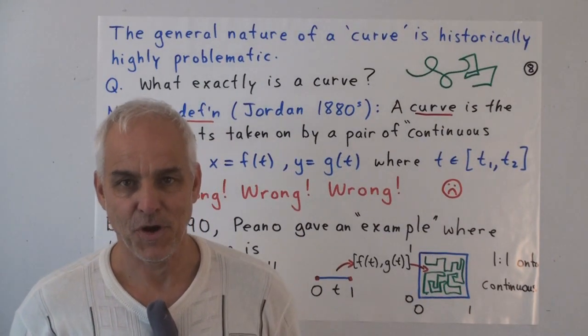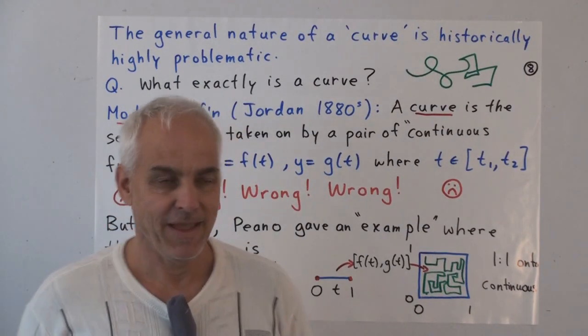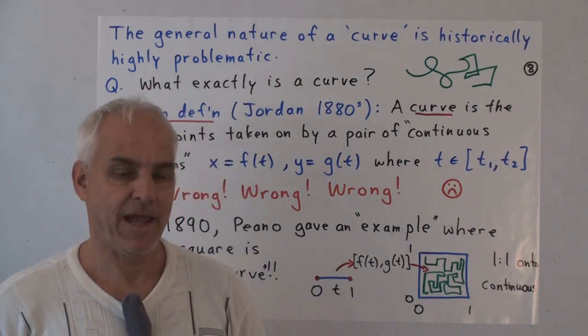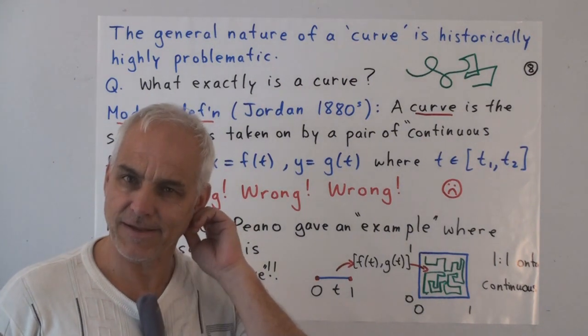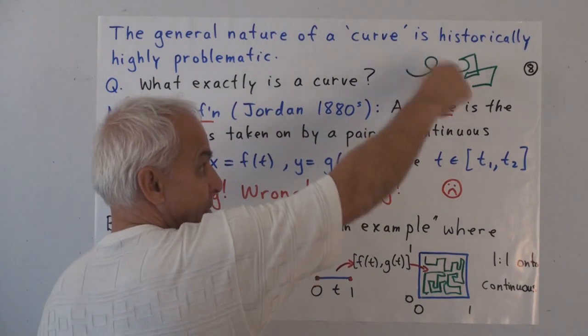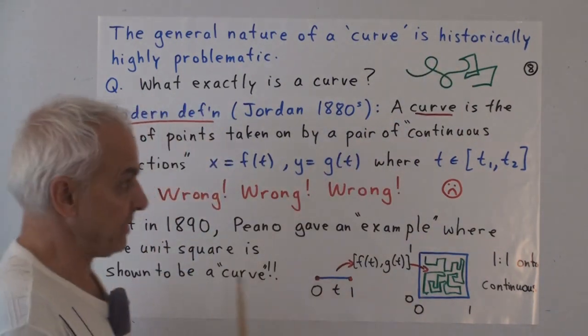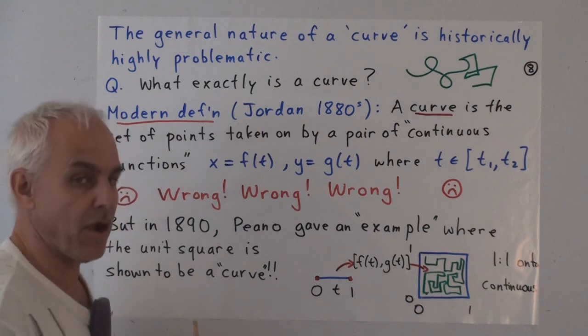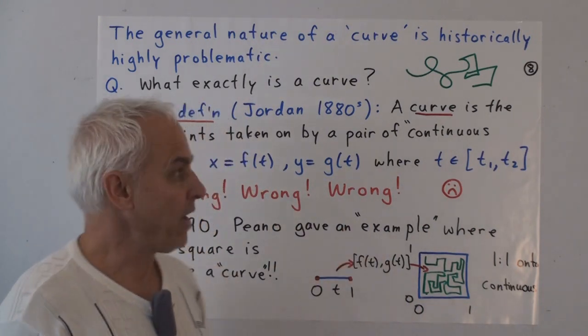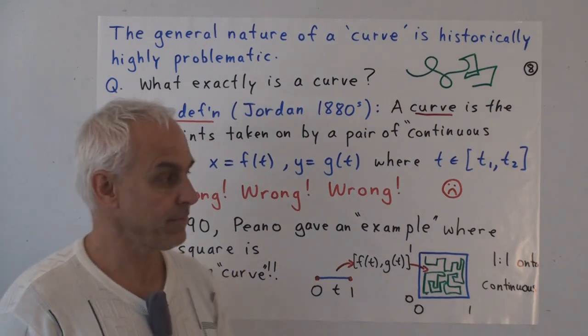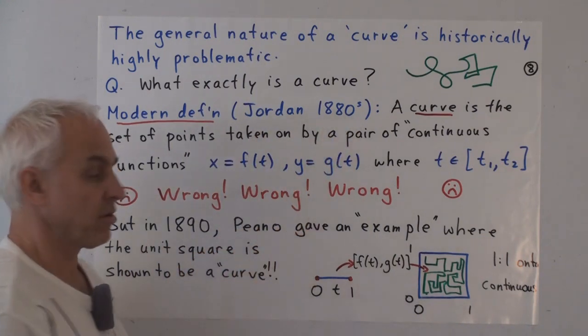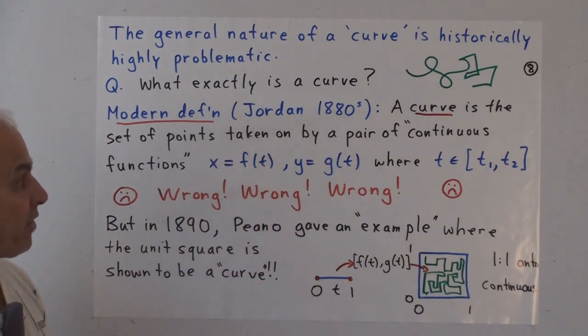But still, it begs the question: what exactly is a curve? It's a rather subtle question. And historically, it's caused quite a lot of problems. There's been a lot of debate and introspection and analysis of figuring out what exactly are we talking about when we're talking about a curve. It's easy enough to put our pen down on paper and squiggle around a little bit and say, well that's a curve. But what exactly are we doing? How are we mathematically modeling that? What is allowed and what is not allowed?